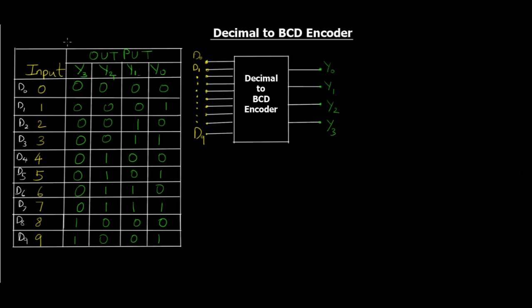As you can see on the screen I have a truth table with some inputs and outputs. I'll explain what those are and this is the block diagram of a decimal to BCD encoder. Before we start, I hope you know what BCD is. BCD stands for binary coded decimal.